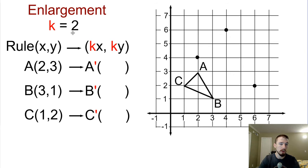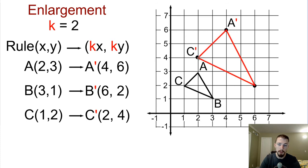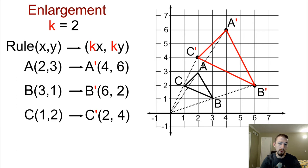If the scale factor K is larger than one, it's called an enlargement because it's going to get bigger. If we take triangle ABC and enlarge it by a scale factor of two, we move all three vertices: (2, 3) becomes (4, 6), (3, 1) becomes (6, 2), and (1, 2) becomes (2, 4). Graphing those points, A prime is at (4, 6), B prime at (6, 2), and C prime at (2, 4). The enlarged triangle is twice as far away from the origin. Its perimeter will be twice as long, but its area will be four times as big — we'll discuss that more in the 12th unit.